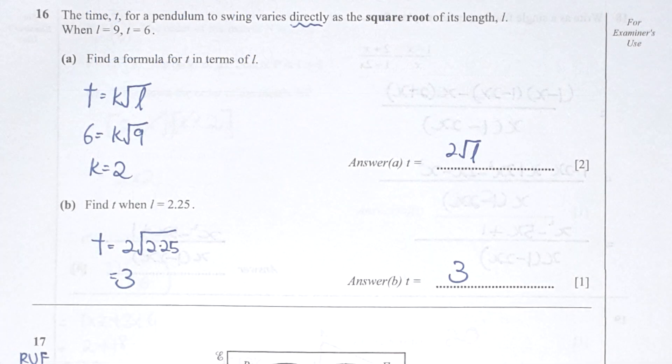Question 16: the keyword is 'directly proportional,' so we use y equals kx, where y is replaced with t and x is replaced with the square root of l. Substituting t equals 6 and l equals 9, the scale factor k equals 2. The final equation is t equals 2 times the square root of l.